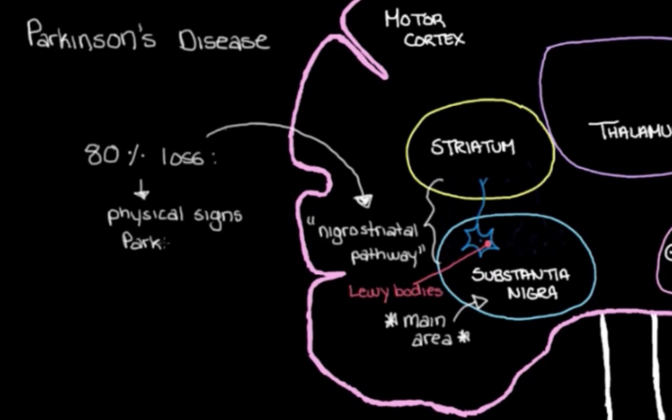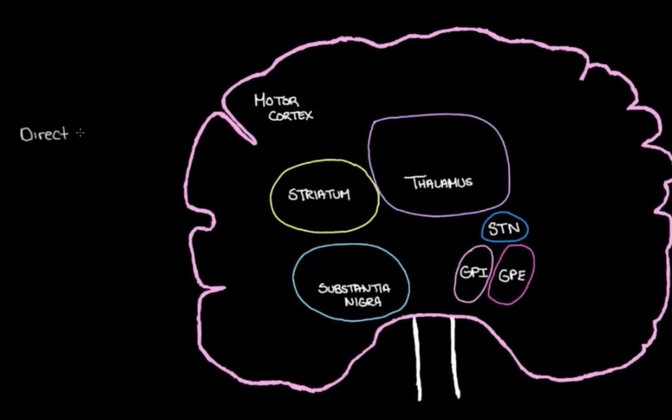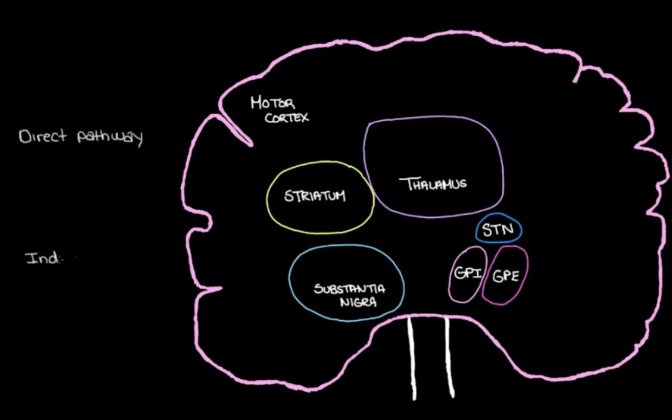So in order to figure out how this loss of dopamine neurons actually leads to the movement problems that we see, we have to think back to the direct and the indirect pathways that the basal ganglia in our brains use to control our movements.